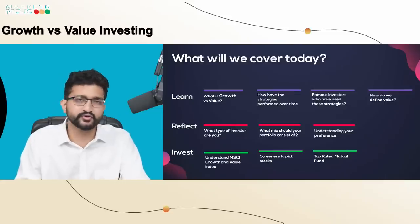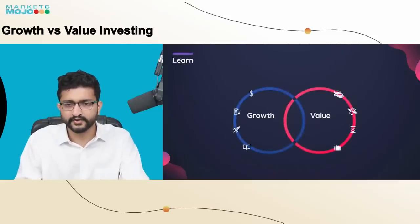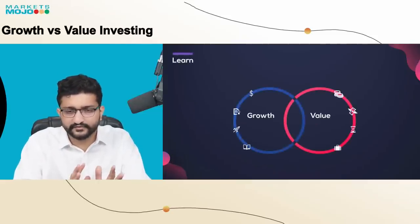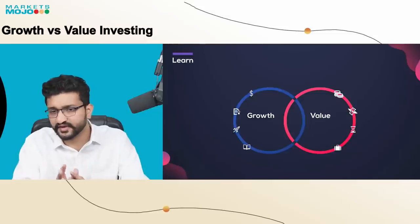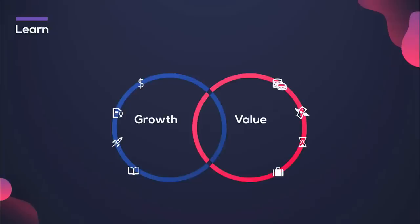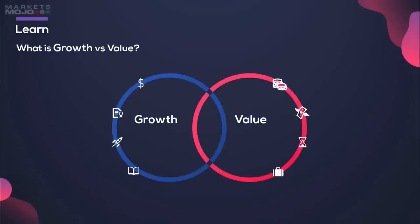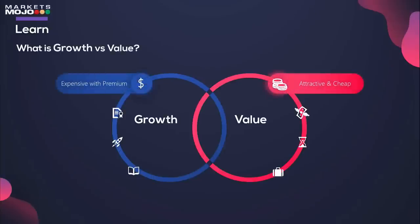Let's start with the first part — learning about value versus growth strategies. On one part of the presentation I have growth-related factors and on the other, value-related factors. The first and most important thing when it comes to distinguishing between these two strategies: the growth strategy looks at companies which are trading at a premium in the market. These stocks have high growth potential, the market does realize that, and hence they could be trading at an expensive range. Whereas value, as the name suggests, looks at the price when it's attractive or cheap — companies which are discounted to their actual intrinsic value.